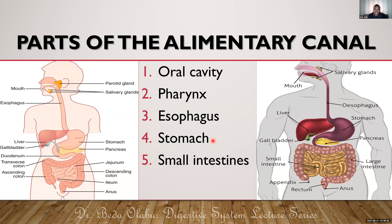There are three segments of the small intestine, and we'll be checking the order in which food passes through them. From the small intestines, food goes to the large intestine, and again you'll be seeing which part of the large intestine comes first and which part last. Those are basically the components of the alimentary canal.